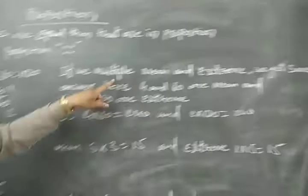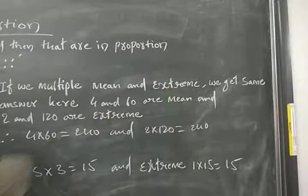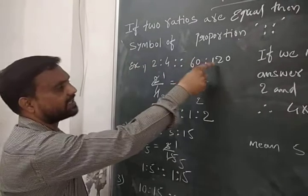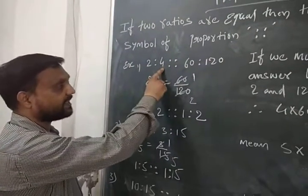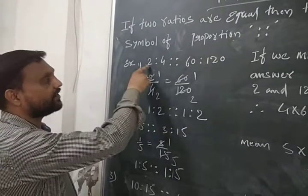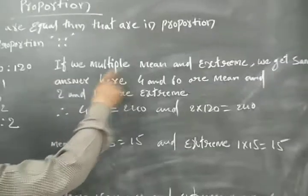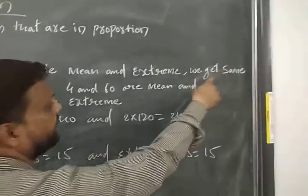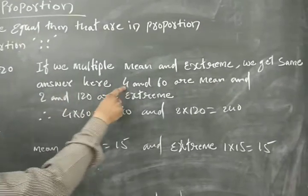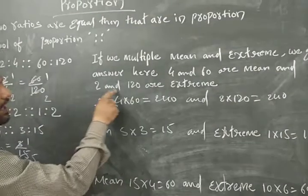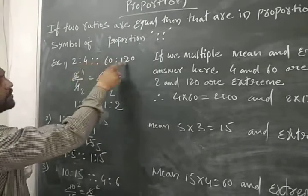If we multiply mean and extreme — now what is mean and what is extreme? The second and third terms are called mean, and the first and last terms are called extreme. So here, four and sixty are mean, and two and one twenty are extreme.